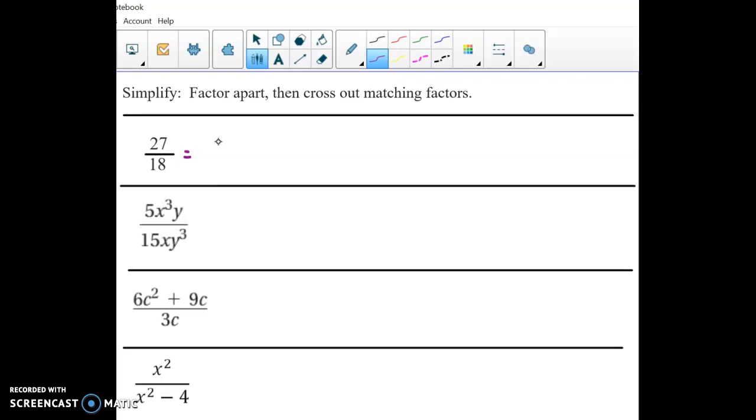Hopefully you realize that 27 is really 3 times 9, and 18 is 2 times 9, and that's useful because now they both have a times 9. So that fraction reduces to, if you cancel out the times 9, reduces to 3/2. The simplified version of 27/18 is 3/2.